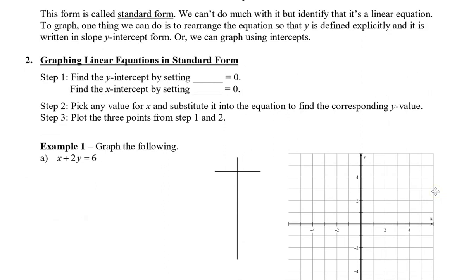So, to begin, we find the y-intercept by setting x equals 0. So, because we're looking for the y-intercept, we want the y value, x is going to be 0. To find the x-intercept, this time we set y equals 0, because we want to find the x value. So, you can pick any value for x and substitute it into the equation to find the corresponding y value, if you want another point. And then plot these three points from step 1 and 2. So, let me show you an example.